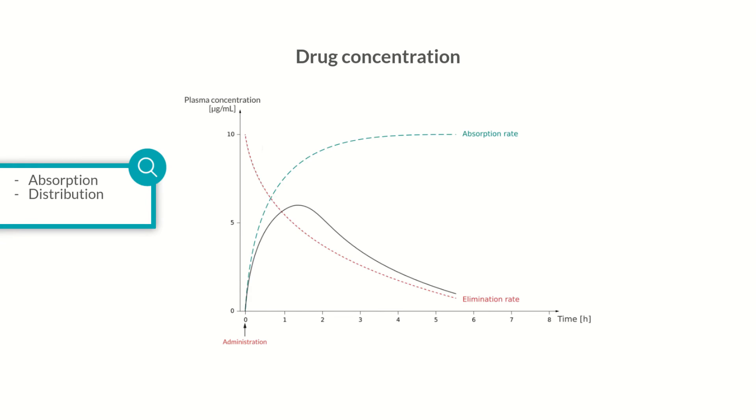In this diagram, the absorption rate is initially much higher than the elimination rate, resulting in a steep increase and high maximum of the curve. In comparison, if the ratio between absorption and elimination is shifted towards elimination, there's a comparatively lower maximum plasma drug concentration. Also, the curve rises less steeply initially but flattens quickly towards the end.